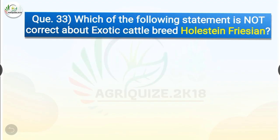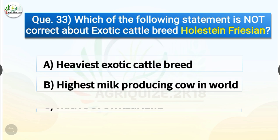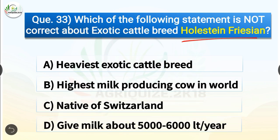Question number 33. Which of the following statements is not correct about exotic cattle breed Holstein-Friesian? The options are: heaviest exotic cattle breed, highest milk producing cow in the world, native of Switzerland, or gives milk about 5,000 to 6,000 litres per year. The correct answer is option C, native of Switzerland. This is incorrect because Holstein-Friesian is native of Holland; the other three statements are correct.